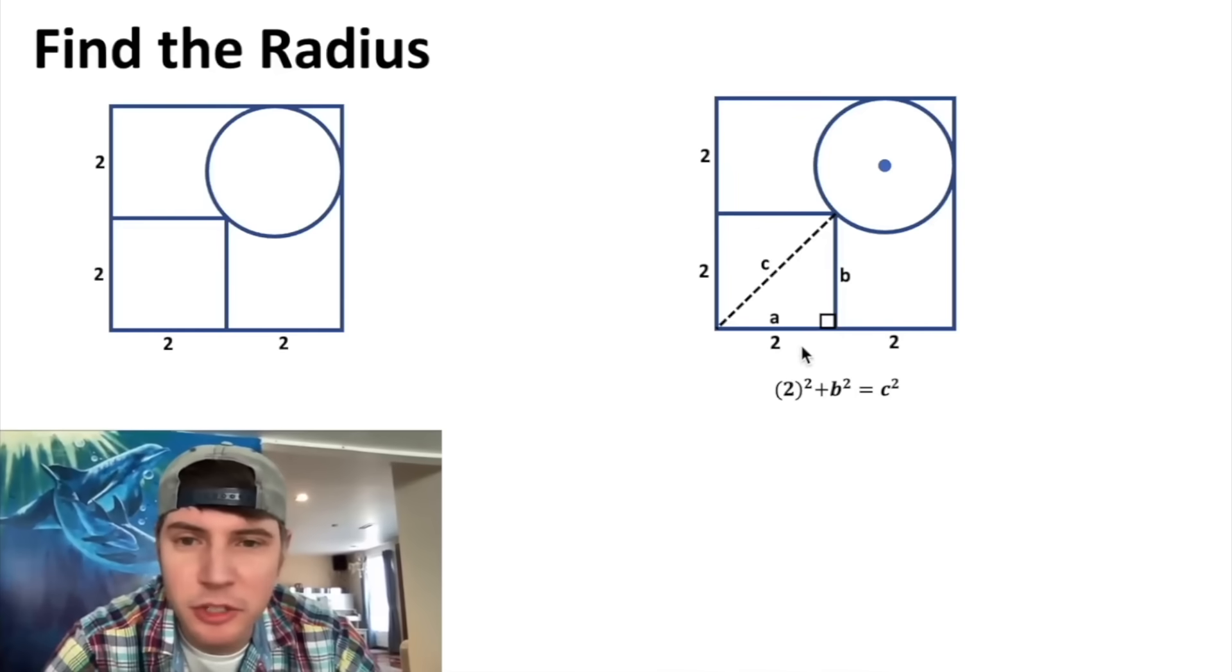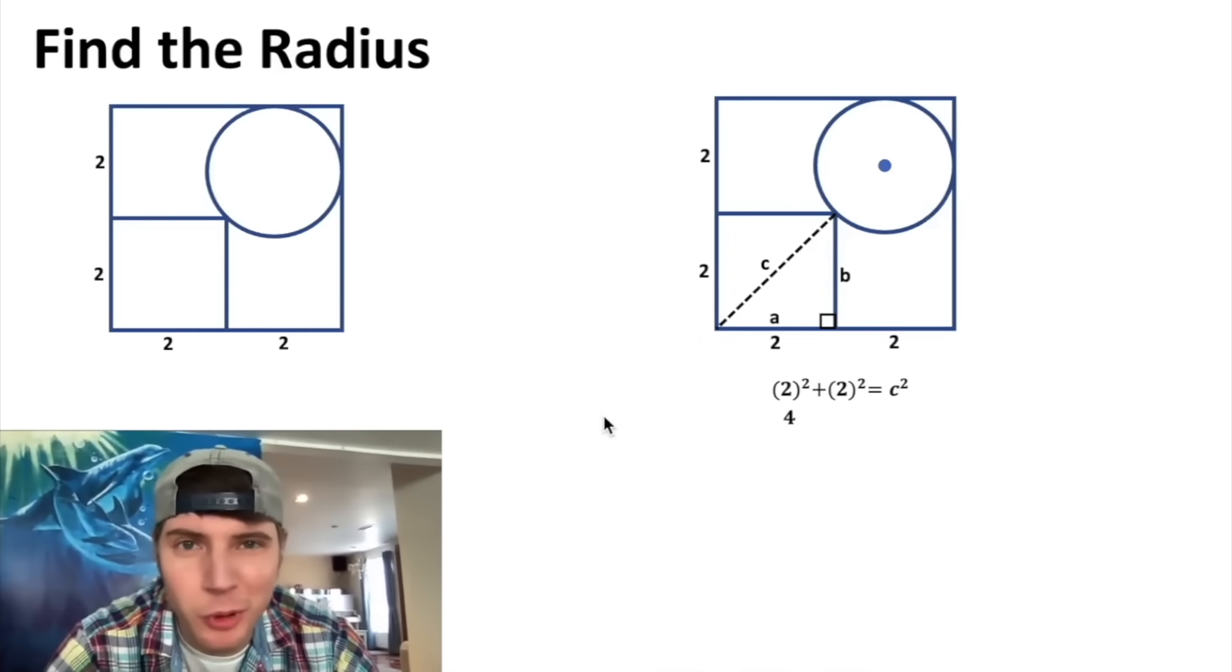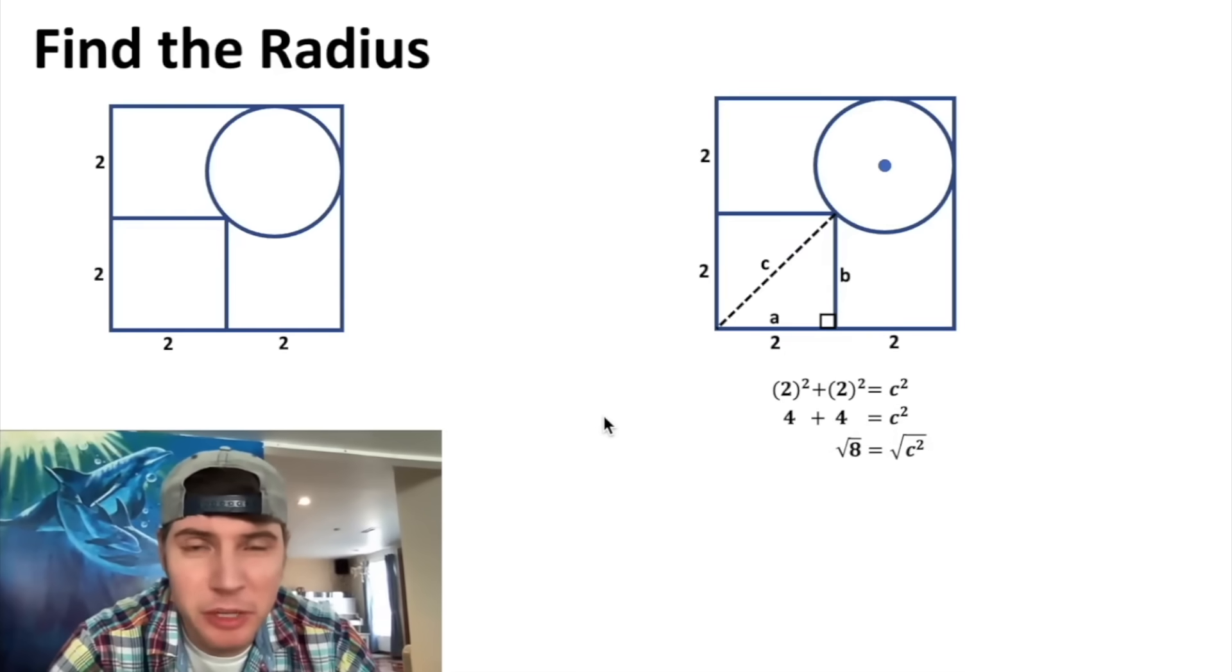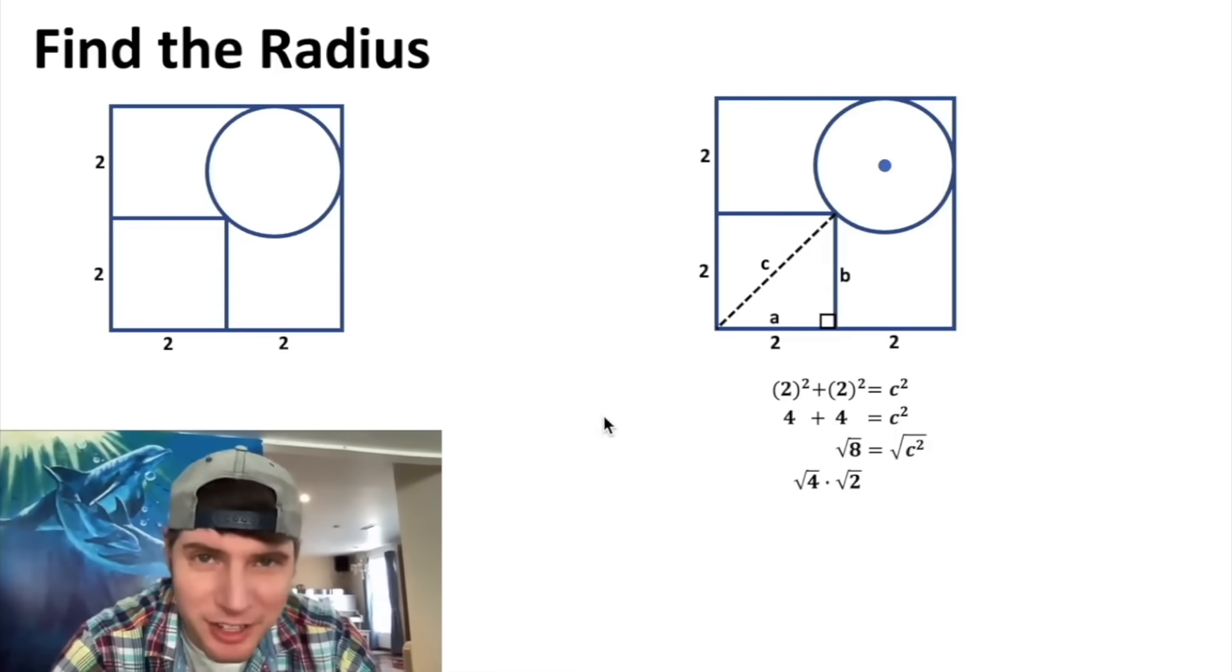And c we'll just leave as c². 2² is 4 plus 2² is 4 equals c². 4 + 4 = 8, we square root both sides. On the left hand side we can break square root of 8 into square root of 4 times square root of 2, and the square root of 4 is 2. On the right hand side it just becomes c.